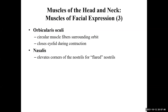Orbicularis oculi — orbicularis means circular in shape, and oculi means eyes. So this naming technique tells you the muscle is circular and located near the eyes. When you contract it, it closes your eyelids — so when you squint, you contract this muscle.